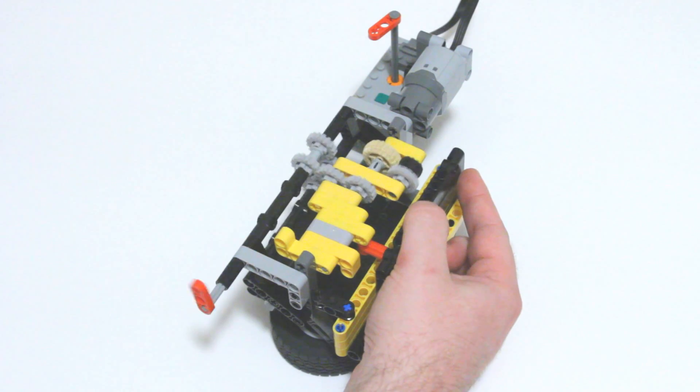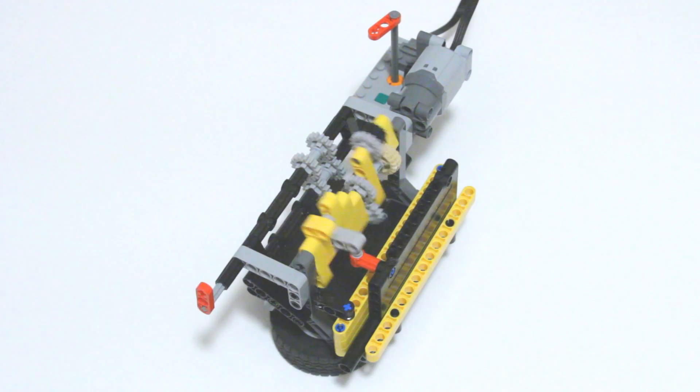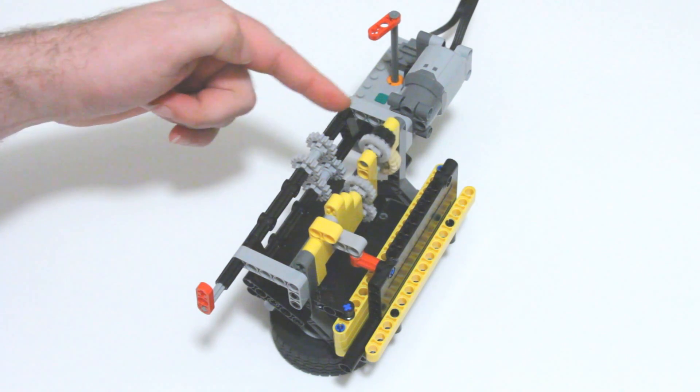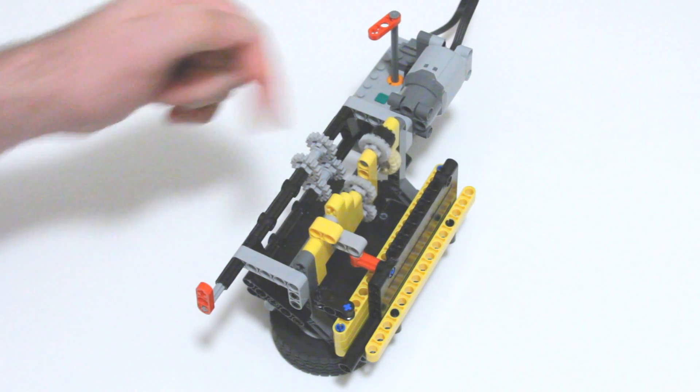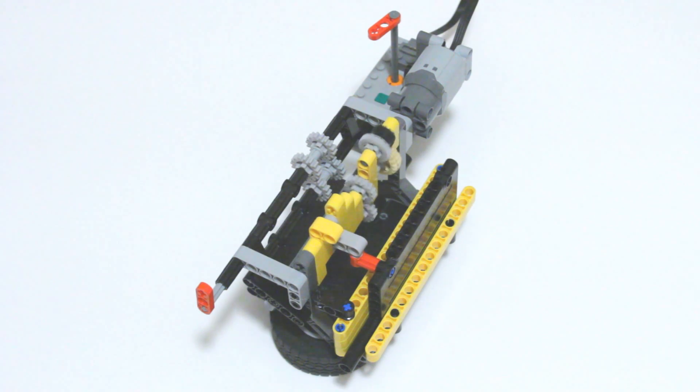When I move the gearbox selector again to the middle, you can see that the whole frame flips over again, and it engages the neutral position. Now, the motor's still spinning, so it's still spinning the gears, but they're not engaging with anything, so the output isn't engaged, and therefore the output doesn't spin.